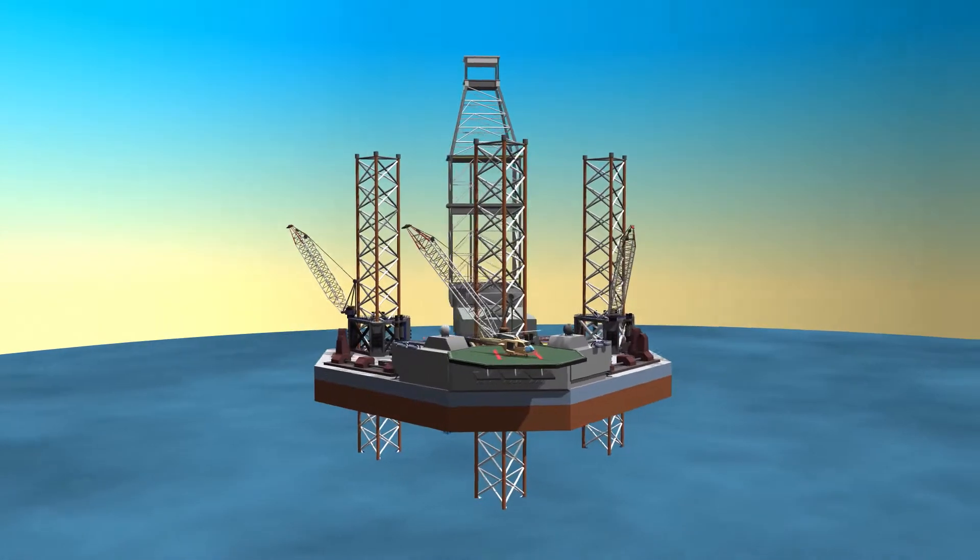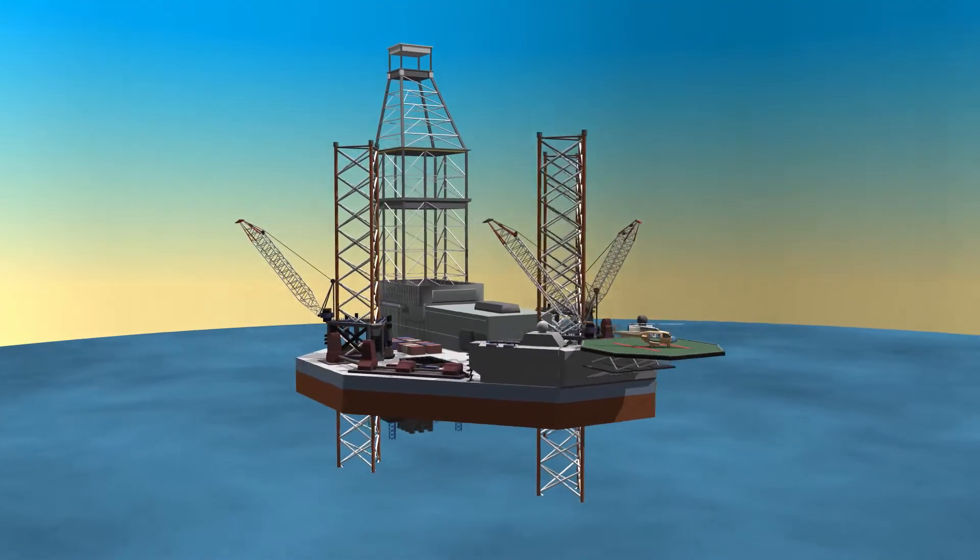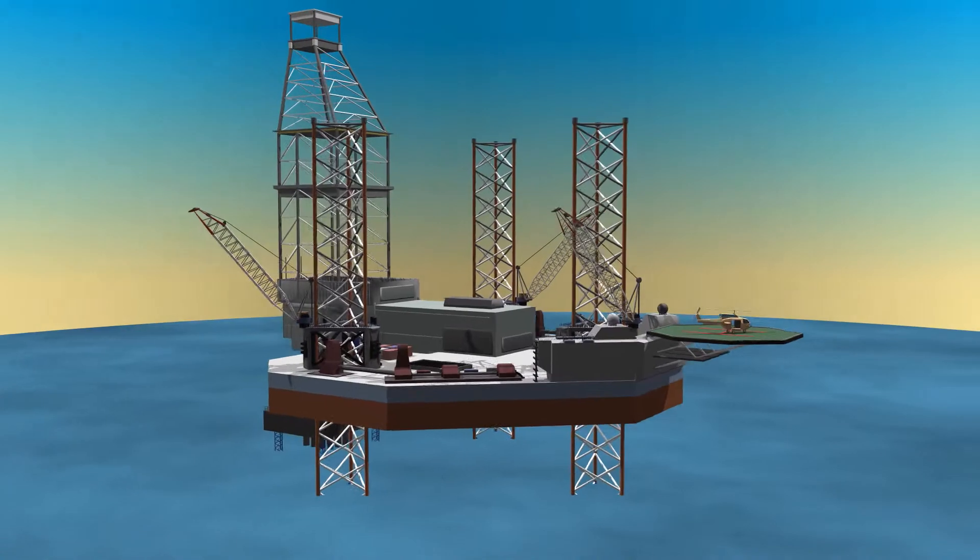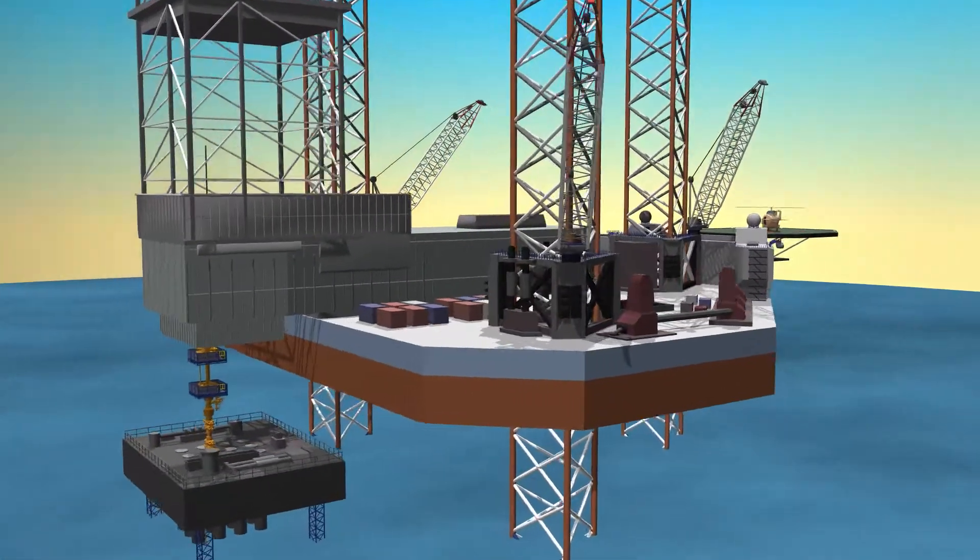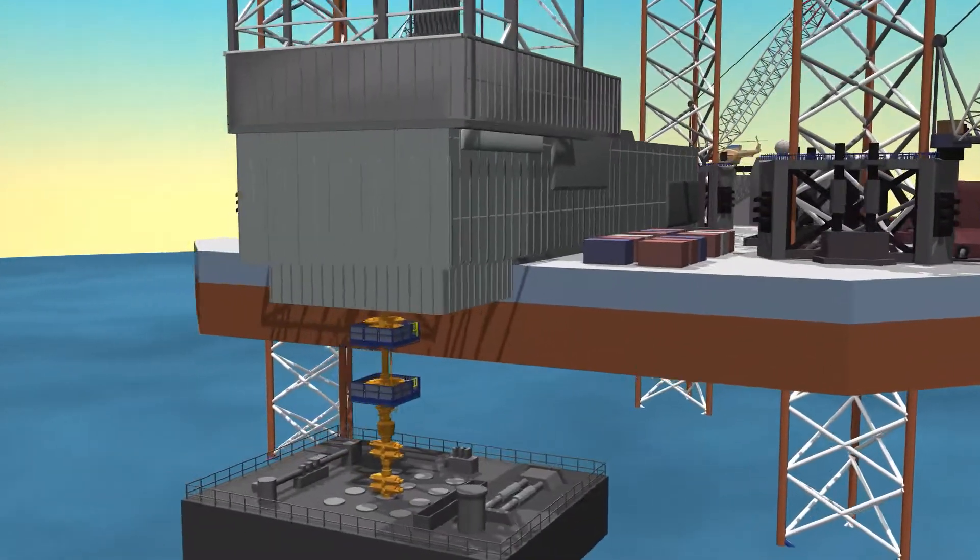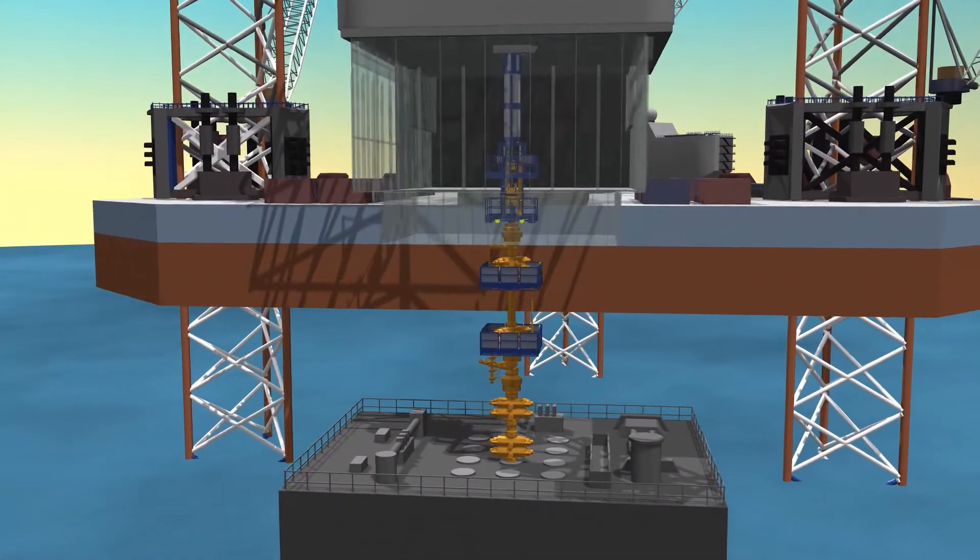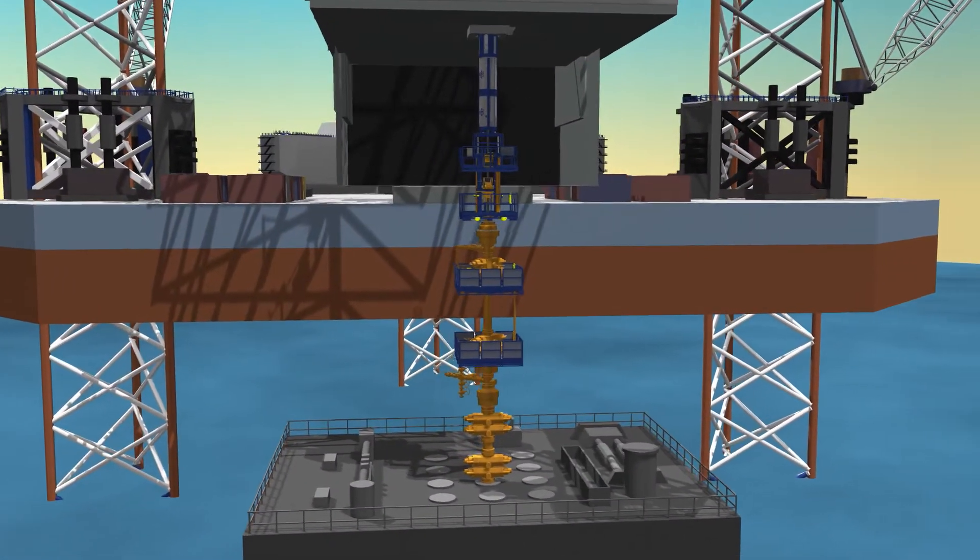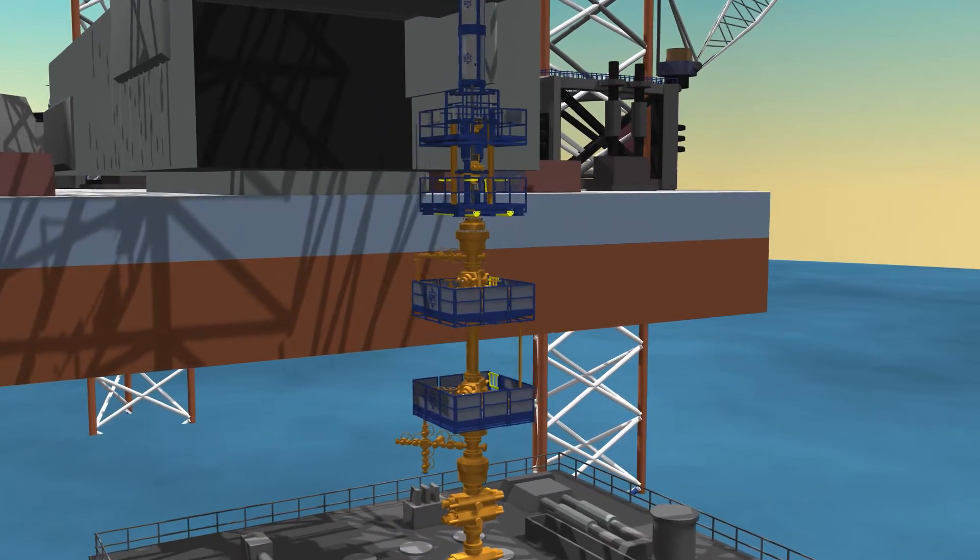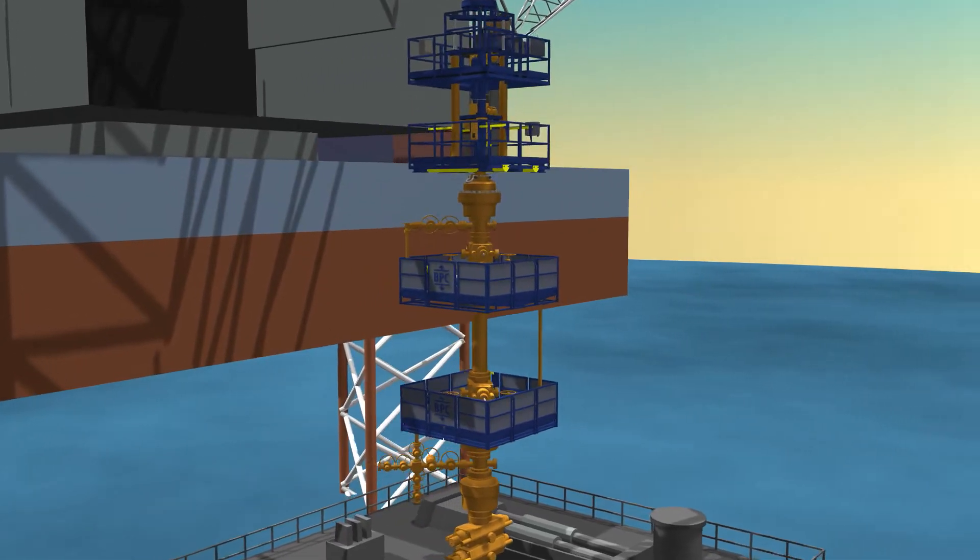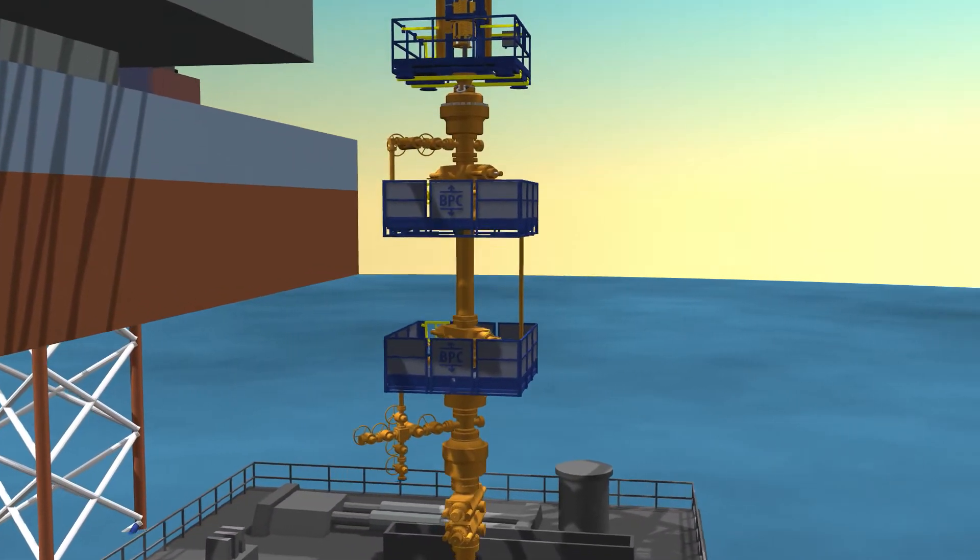Balance Point Control creates world-leading snubbing units for either onshore or offshore operations and has recently introduced the CSU-160. The CSU-160, one of the latest generations of rig-integrated snubbing units, combines safety and efficiency on board conventional and automated jack-up rigs.